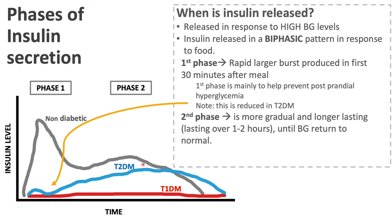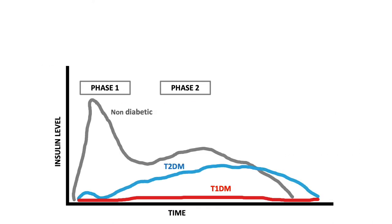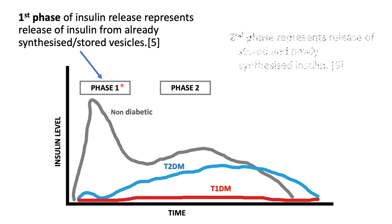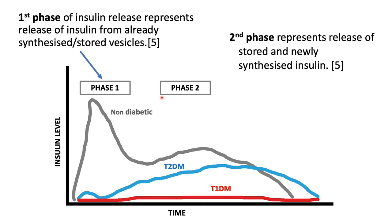The second phase is more gradual, occurring over one to two hours until blood glucose returns to normal. When blood glucose falls within the range of 4.4 to 4.7 mmol/L, insulin levels start to decline — we don't want to go too low as that would push us into hypoglycemia. In phase one, the insulin released has already been synthesized and stored in vesicles, ready to be released in response to a meal. In phase two, the insulin includes both stored vesicle insulin and newly synthesized insulin as well.